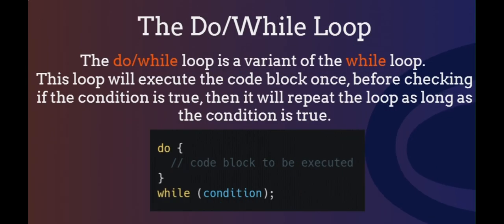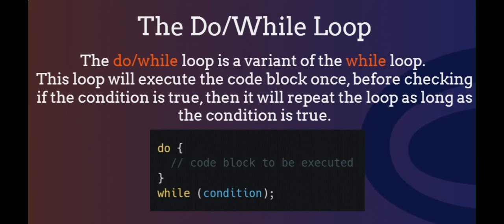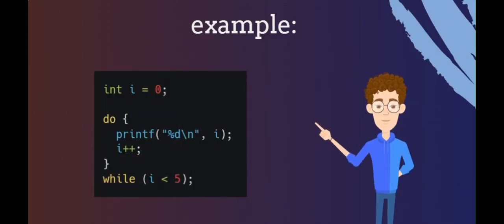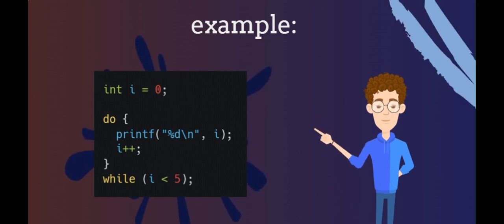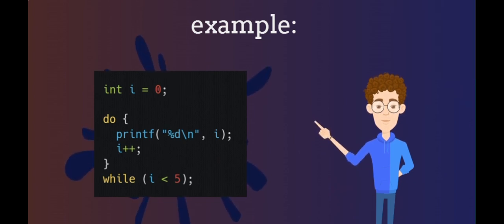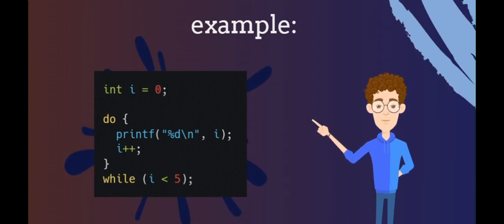The do-while loop is a variant of the while loop. This loop will execute the code block once before checking if the condition is true, then it will repeat the loop as long as the condition is true. The example below uses a do-while loop. The loop will always be executed at least once, even if the condition is false, because the code block is executed before the condition is tested. Do not forget to increase the variable used in the condition, otherwise the loop will never end.